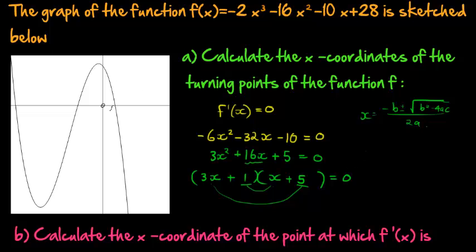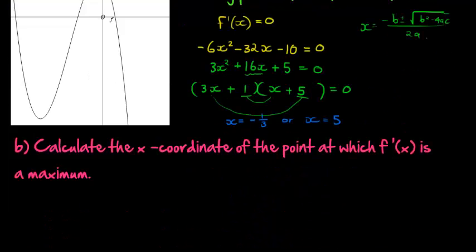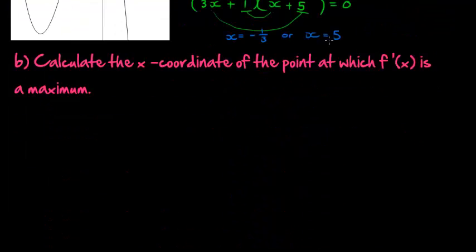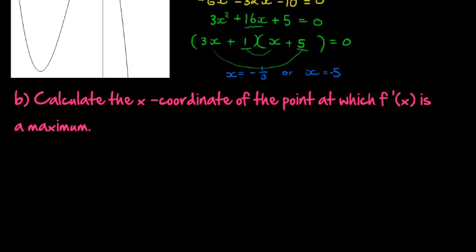So we get two answers here. We get that x is either equal to negative a third or x is equal to 5. So the next question asks us.